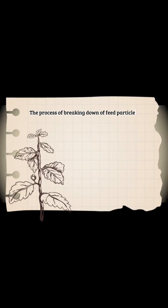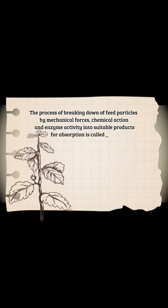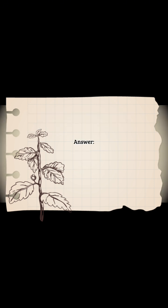The process of breaking down of feed particles, biomechanical forces, chemical action, and enzyme activity into suitable products for absorption is called: A - metabolism, B - dissolution, C - digestion, D - assimilation. Answer: C - digestion.